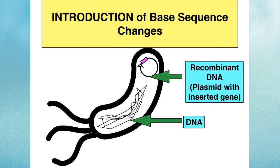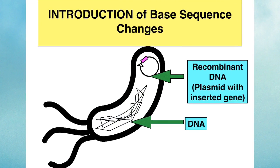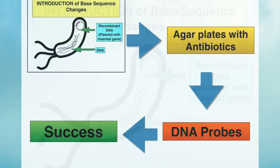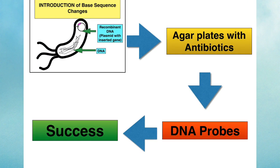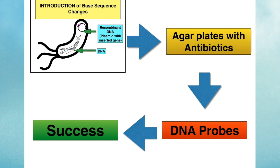So if transformation is successful, well then we have the introduction of base sequence changes. How can scientists truly tell those bacteria which have been transformed, those that have accepted the vector with the recombinant DNA?